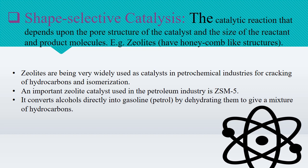Zeolites are widely used as catalysts in petrochemical industries for cracking of hydrocarbons and isomerization. An important zeolite catalyst used in the petroleum industry is ZSM-5, which converts alcohol directly into gasoline (petrol) by dehydrating them to give a mixture of hydrocarbons. So zeolites are chemically aluminosilicates.